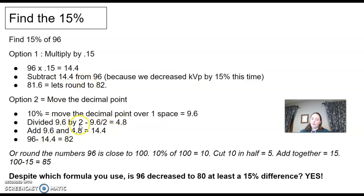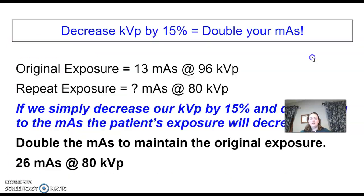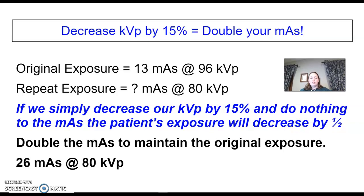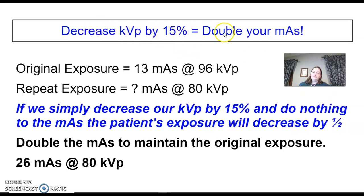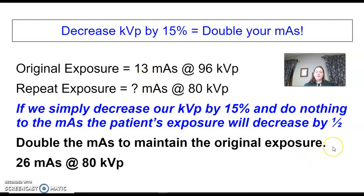Or you can move the decimal point. With 96, it gives you some decimal points, so just round — it gets us close to 85. Either way, we have to figure out: was this change at least 15%? Yes, it was. So we decrease KVP by 15% and we double our mAs. The original exposure was 13 mAs at 96; we had to decrease our KVP to 80, so we double our mAs to match that.